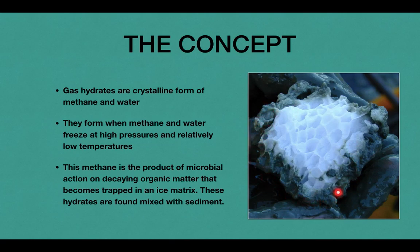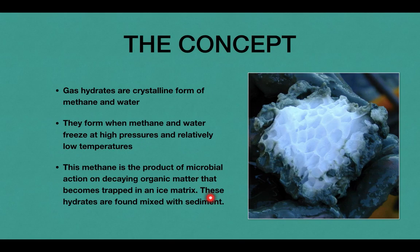You can see in this diagram here, this is a picture of gas hydrates — how they look. From the point of view of prelims, you have to associate ideas like: these gas hydrates are associated with methane. When you say gas hydrate, it is methane. This methane is formed out of microbial action on decaying organic matter. This methane is of organic origin and when it is formed, it is trapped in water — trapped in an ice matrix.